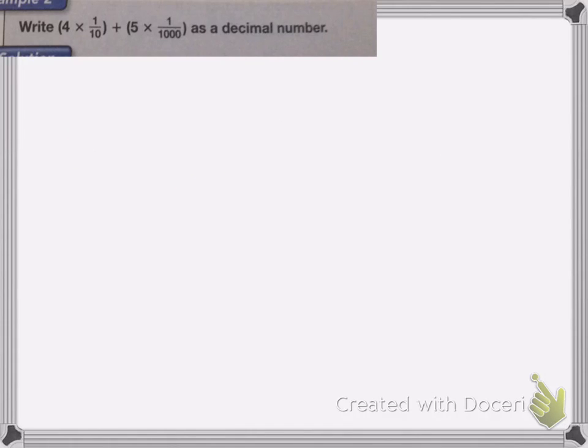Here we have this expanded notation, and I want to write it as a decimal number. So we have 4 times 1 tenth. So that means I'm going to start out after the decimal place. So remember, our decimal places go tenths, hundredths, thousandths. So it's 4 times 1 tenth. So that will be 4 in the tenths place.